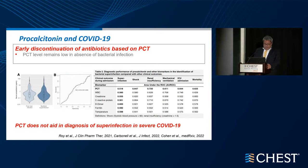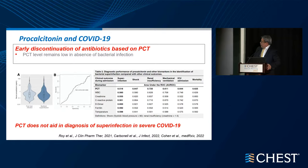Pure viral infections can show procalcitonin as high as more than 10, which overlaps with COVID-19 patients who have bacterial superinfection — it's really hard to distinguish. In fact, procalcitonin had a better area under the curve for predicting renal insufficiency, mechanical ventilation, and severe disease rather than superinfection. Therefore, the use of procalcitonin does not help in diagnosing bacterial infection or in de-escalating antibiotics in this context.